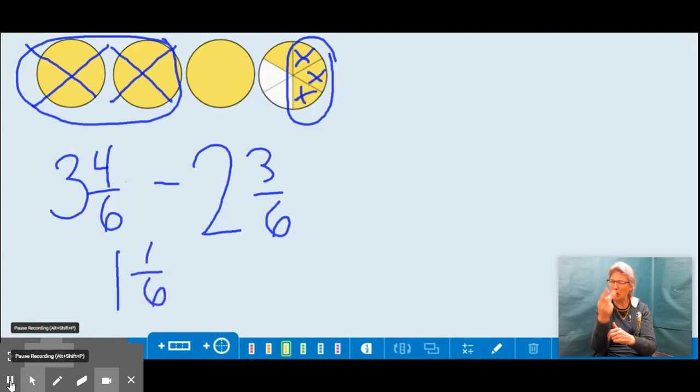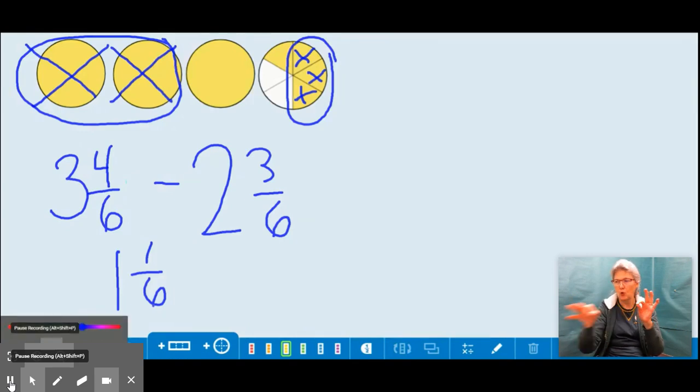All right. Well, I also want to look at solving this problem using our traditional algorithm or sometimes what we call stacking. All right, here we go. So when I look at this, I'm solving the same problem, except I'm solving it vertically. So when I look at this, I want to subtract my fractional parts of the mixed number first, which are what? Yeah, you got it. My four sixths and my three sixths.